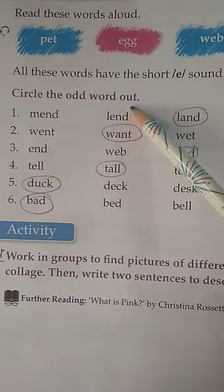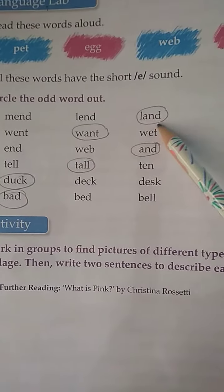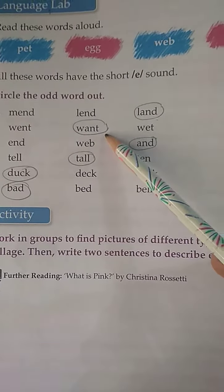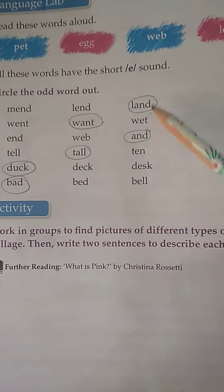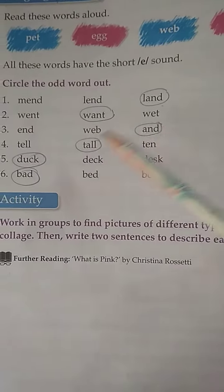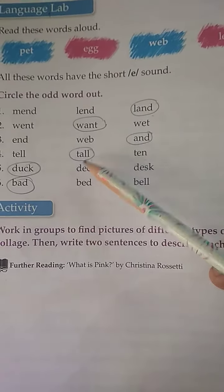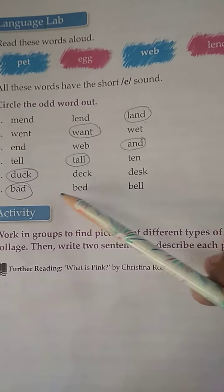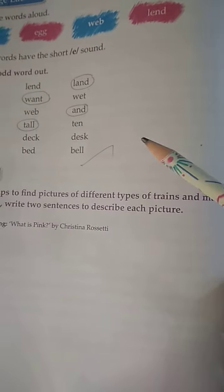Circle the odd word out. Meant, lent, land — each sound is different, so 'land' is odd, circle it. Went, want, wet — 'want' is the odd one. Web — this is the odd one. Tell, tall, then — 'then' is odd, circle it. Duck, deck, desk — 'desk' is different. Bad, bad, bell — 'bell' is different.